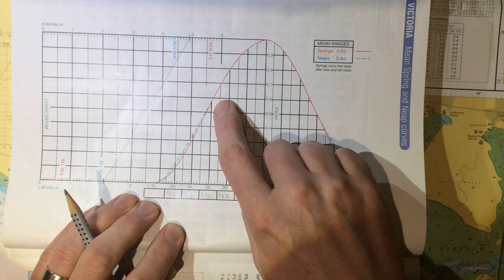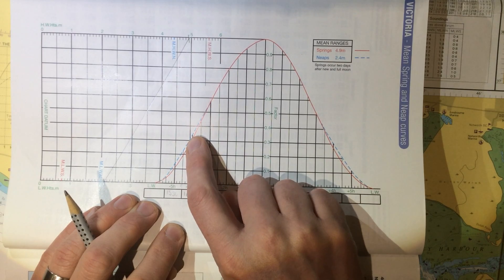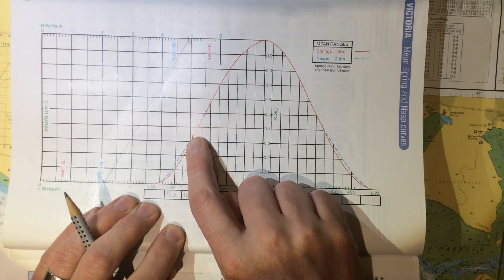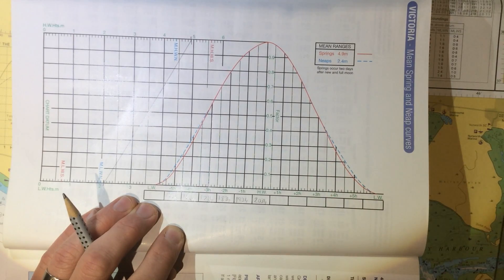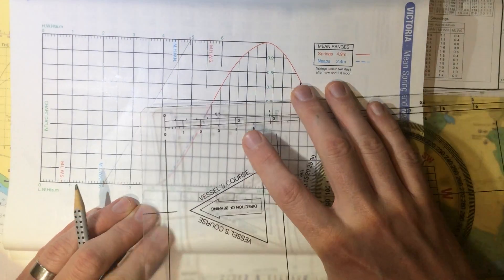Now at this point, we have a choice of using a red line or sometimes a blue line and those refer to whether it's a neap or a spring. In this case, there's only one line, so we'll use that one line.